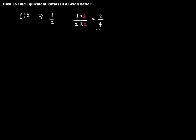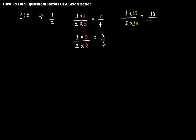Let's find more equivalent ratios of 1:2. If we multiply both numbers by 3, it becomes 3:6. If we multiply by 13, we get 13:26. And if we multiply by 100, we get the equivalent ratio 100 over 200.